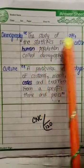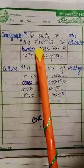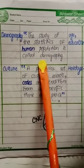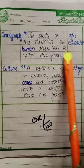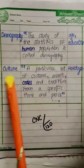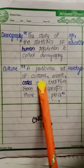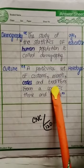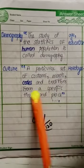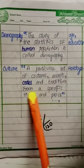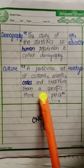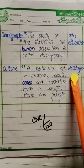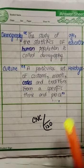Demography: the study of the statistics of human population is called demography. Age and education. Culture: a particular set of customs, moral values, and traditions formed from a specific time and place.